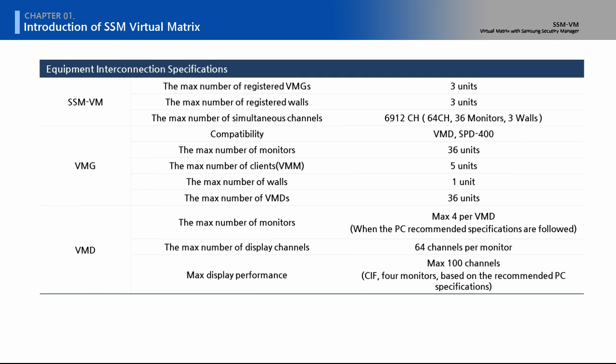The maximum number of registered VMGs and walls is three units. SSM VM can control up to 6,912 channels. One monitor displays up to 64 channels, one VMG can control up to 36 monitors, and one SSM VM can control up to 3 VMGs and video walls.